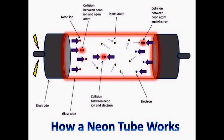To create neon light, electricity is applied to the ends of a glass tube filled with neon. Atomic particles called electrons stream from one end of the tube to the other, and on their way they collide with atoms of neon.